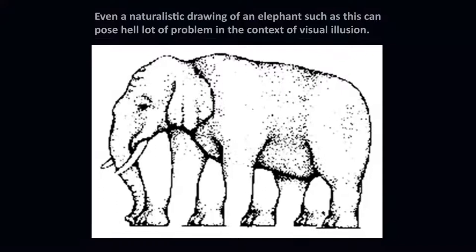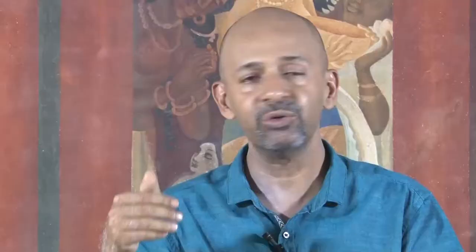A very common example: even a naturalistic drawing of an elephant can pose a great problem in the context of visual illusion. If you begin to count the number of legs this elephant has, the trick starts to work — the drawing creates genuine perceptual confusion about something as simple as the number of legs on the animal.